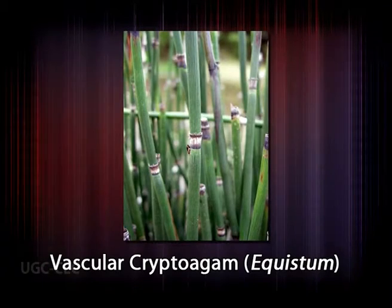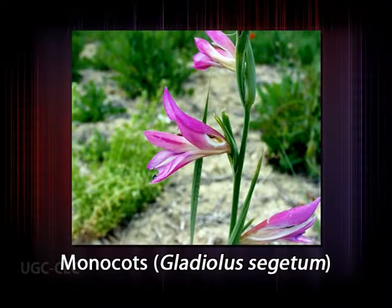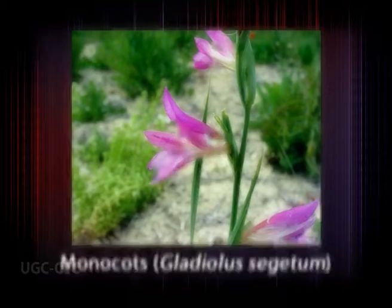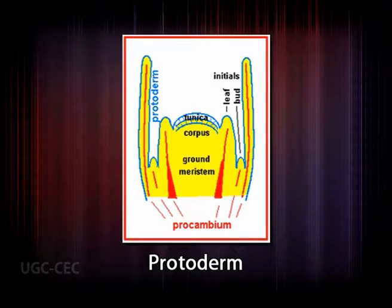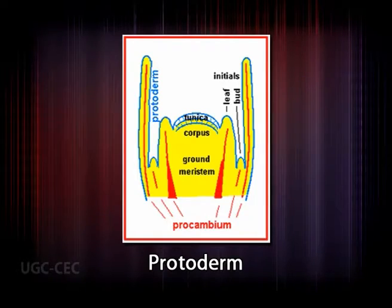Three main types of tissue systems exist in the primary plant body: dermal tissue, ground tissue, and vascular tissue. Each of the three main tissues has its own distinct, functionally related cell types. The dermal system is composed of the epidermis. Epidermal tissues, which originate from the protoderm, cover all parts of the primary plant body. This is probably the earliest tissue system to appear in embryogenesis.